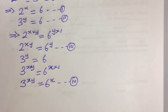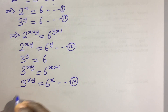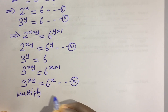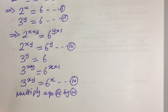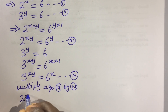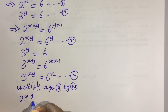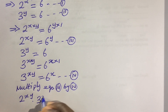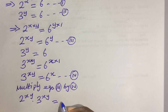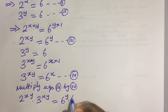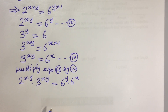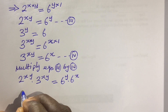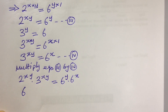A critical look at equations 3 and 4 gives us something special. We multiply equation 3 by equation 4. The left-hand side becomes 2 to the power of xy times 3 to the power of xy, and the right-hand side is 6 to the power of y times 6 to the power of x. Now the bases on the left have the same exponent, so we multiply the bases: 2 times 3 equals 6, giving us 6 to the power of xy.